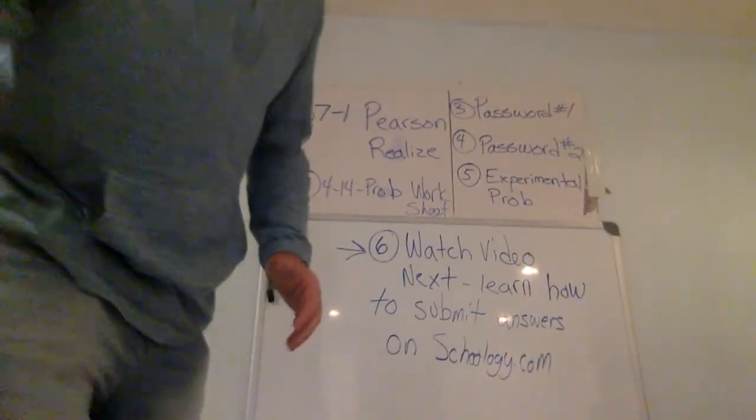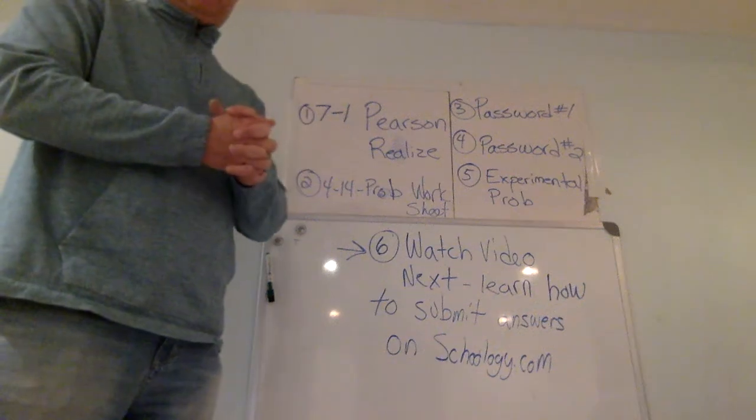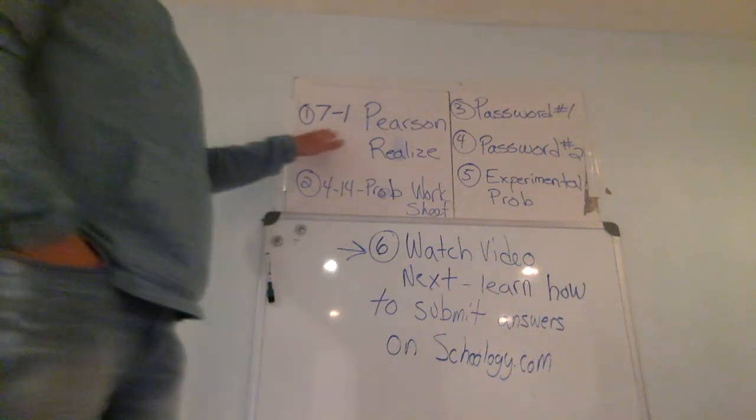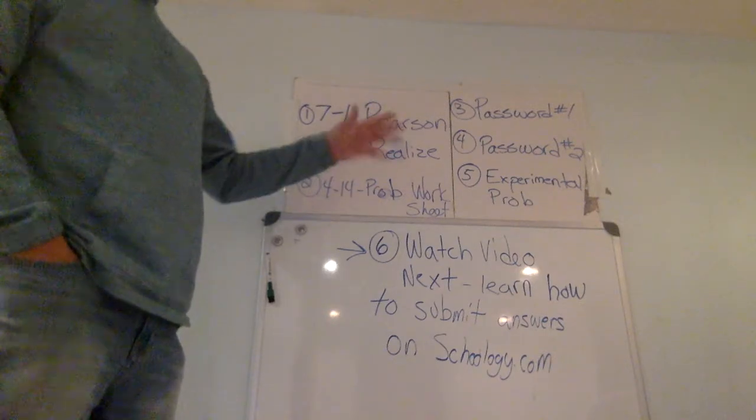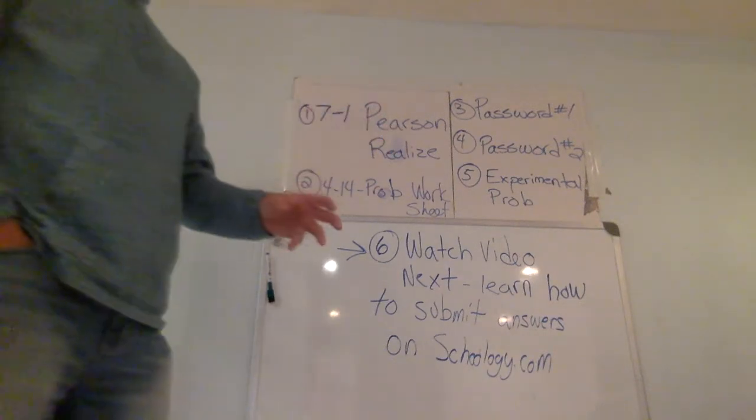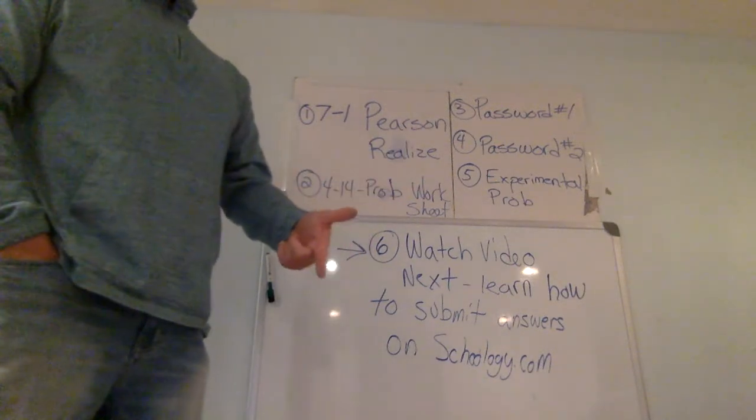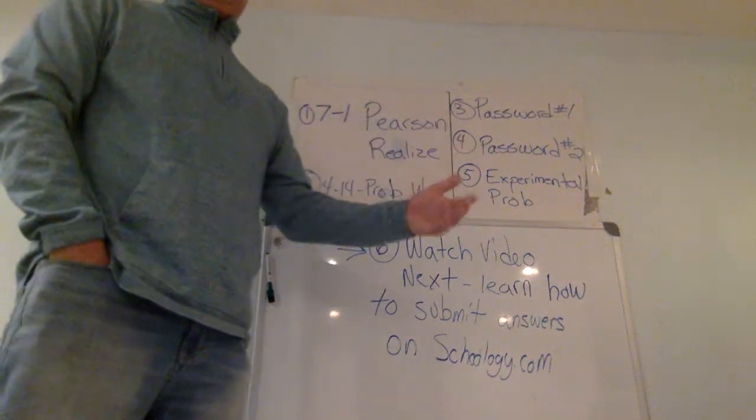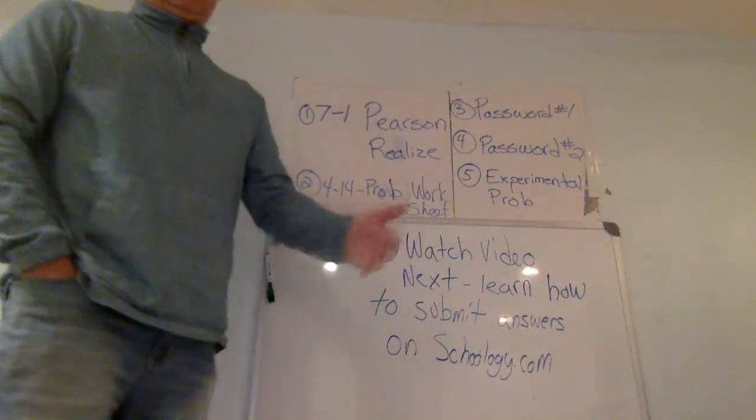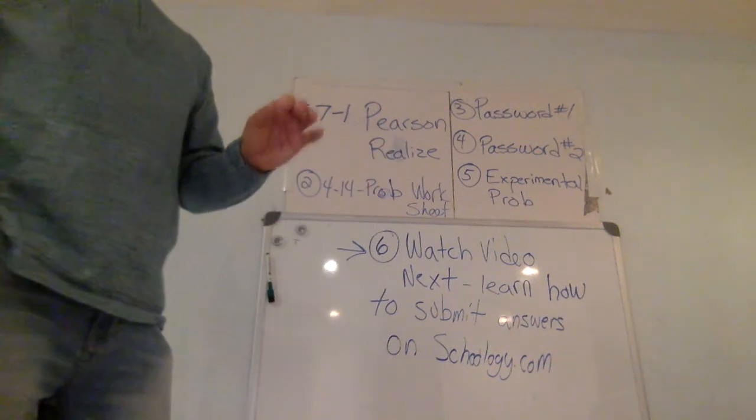I just want to go through the assignments that you were assigned and let you know what is expected. 7-1 was our Pearson Realize, where you had to go in and watch examples from 7-1, do the practice problems, and then submit the quiz. Don't worry about getting the quiz right or wrong. If you get it wrong, you can go back and fix it. I just want to see that you did it and you tried.